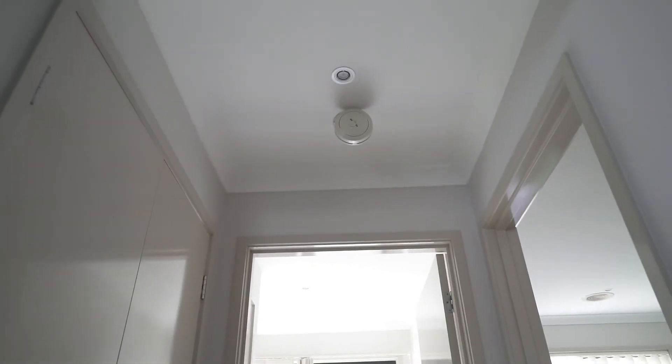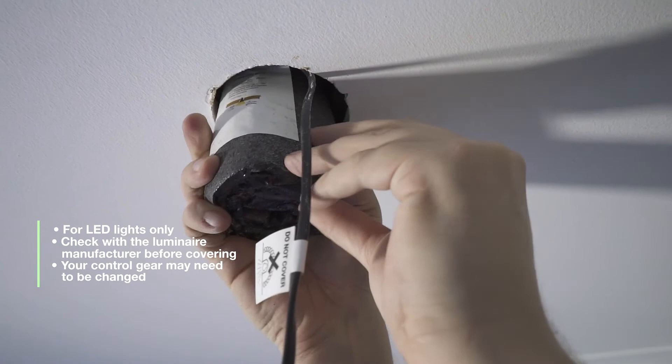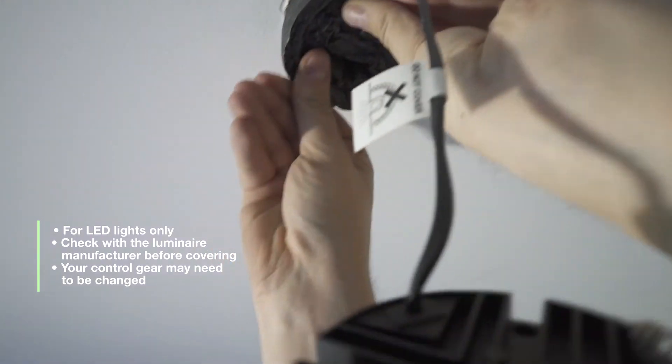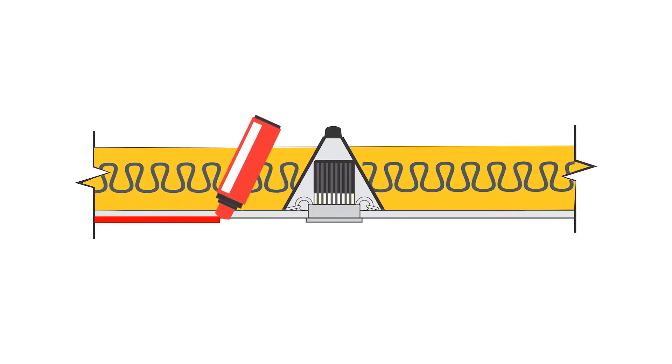Older lights or ones that aren't insulation contact or IC rated can use something like this down light cover. It's fireproof, makes a good seal and even provides some insulation value.